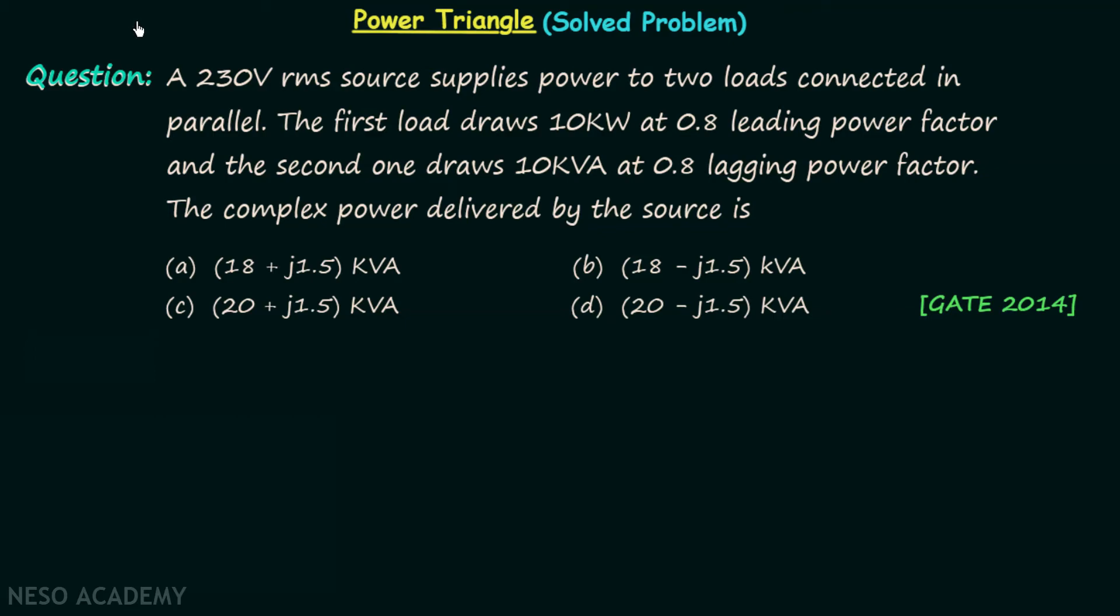In the previous lecture we discussed power triangle. Now we are going to solve one question where knowledge of power triangle is required. According to this question, a 230V RMS source is supplying power to two loads connected in parallel. The first load draws 10kW at 0.8 leading power factor and the second one draws 10kVA at 0.8 lagging power factor.